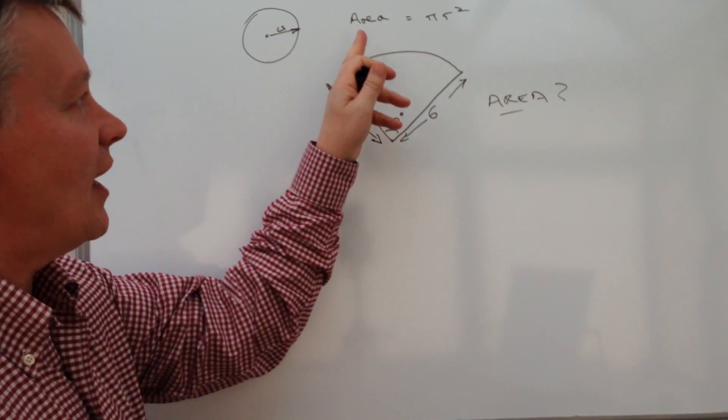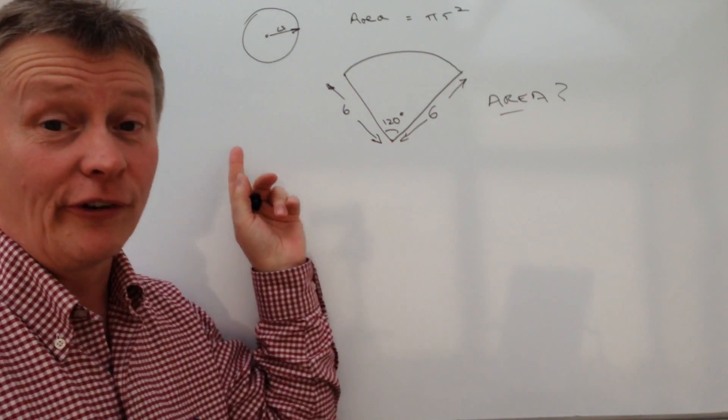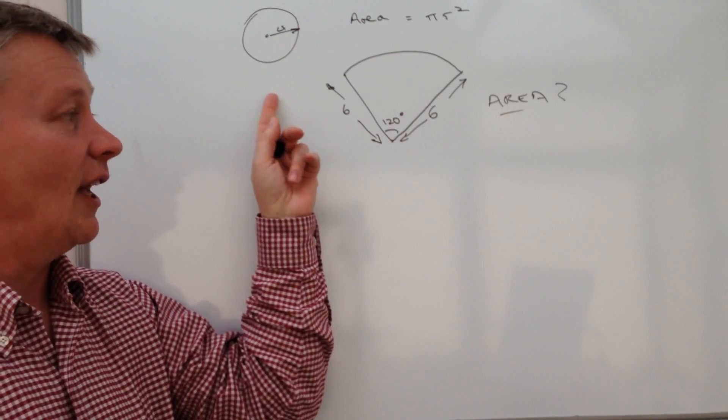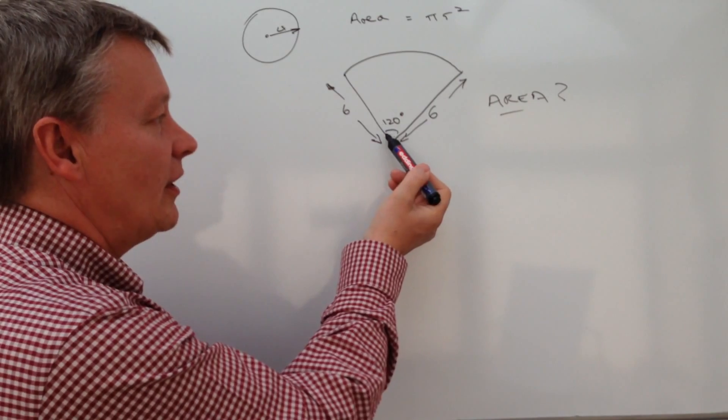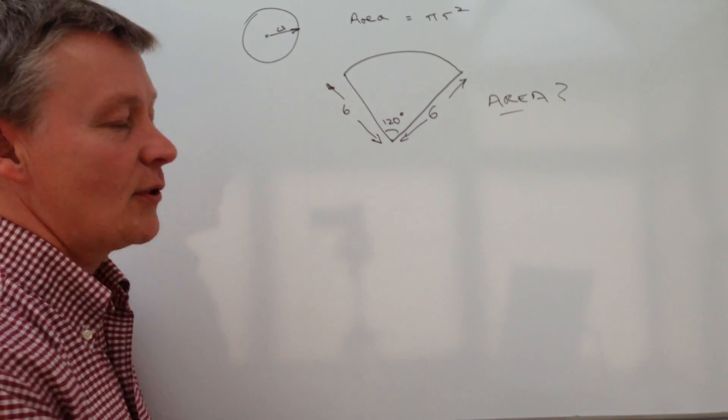So what we've got is area equals pi r squared for a full circle. However, we've only got the part of a circle which has got an interior angle of 120 degrees.